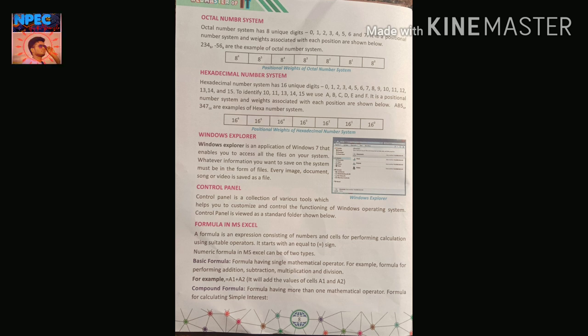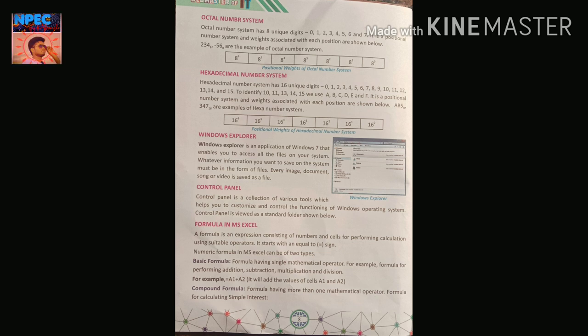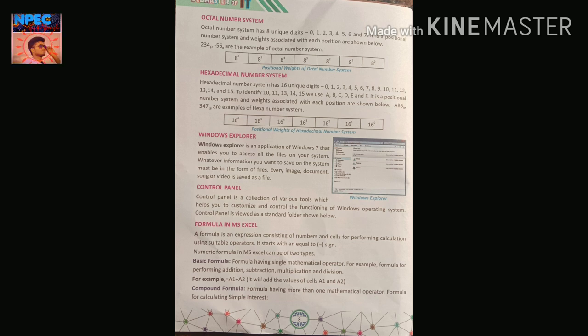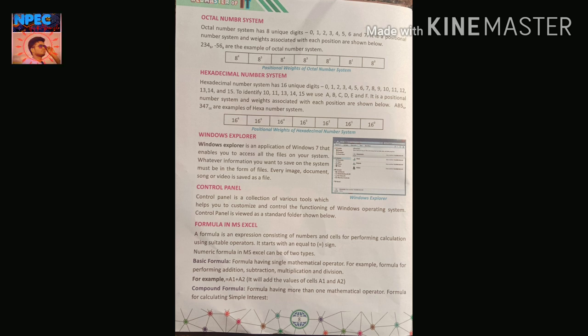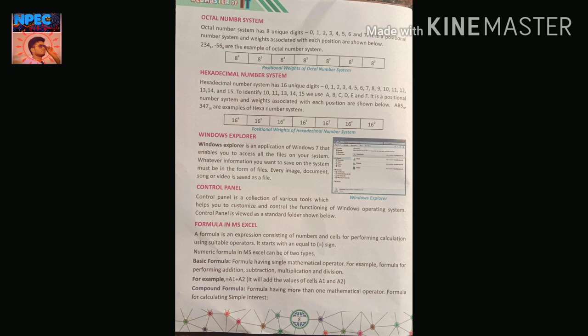Hexadecimal number system has 16 unique digits. In math we have only 0 to 9, but hexadecimal needs 0 to 15 — that is 16 digits. Since 10, 11, 12, 13, 14, 15 would be confused as separate digits by the computer, we assign them characters: A, B, C, D, E, F — six characters for digits 10 through 15.